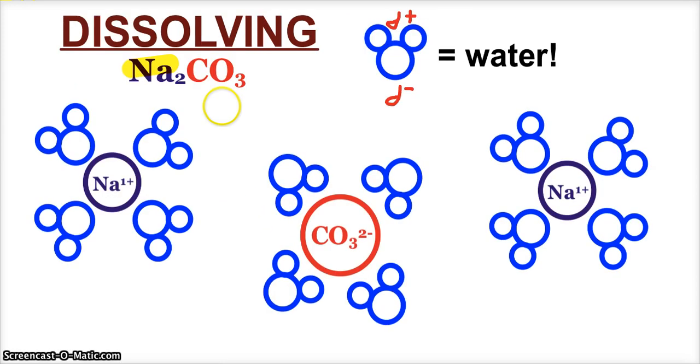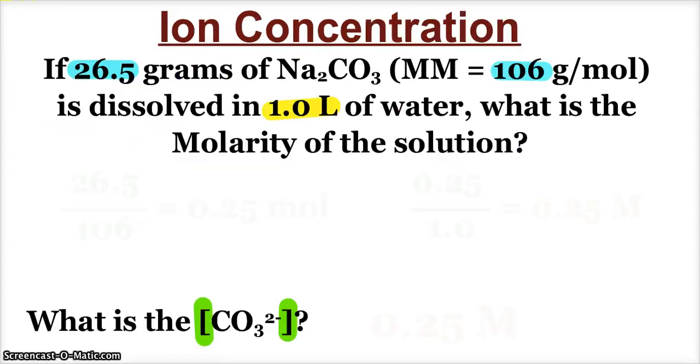let me bring it back up, we see that every time a formula unit of sodium carbonate goes in the water, we get two sodium ions and one carbonate ion. So, if we put one mole of sodium carbonate in, we get one mole of carbonate ions. It's a one-to-one ratio in that formula. And so,